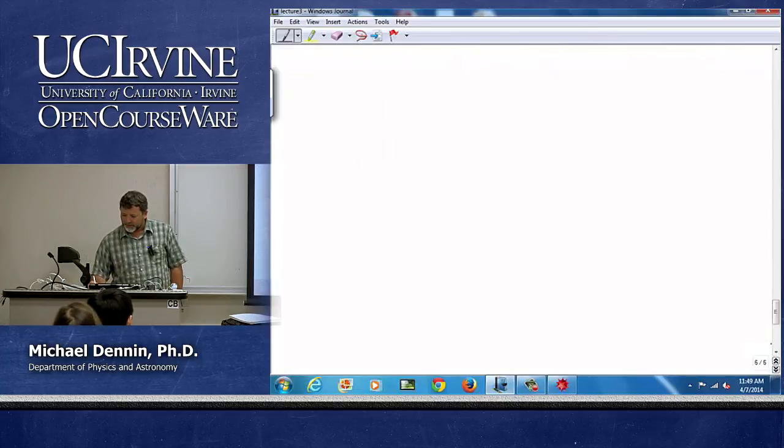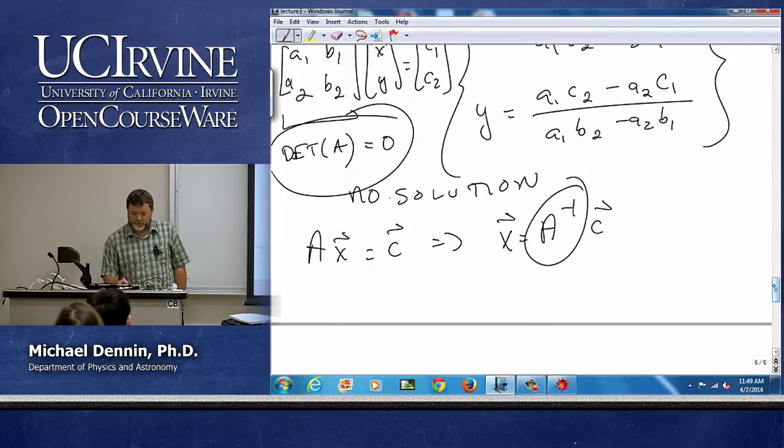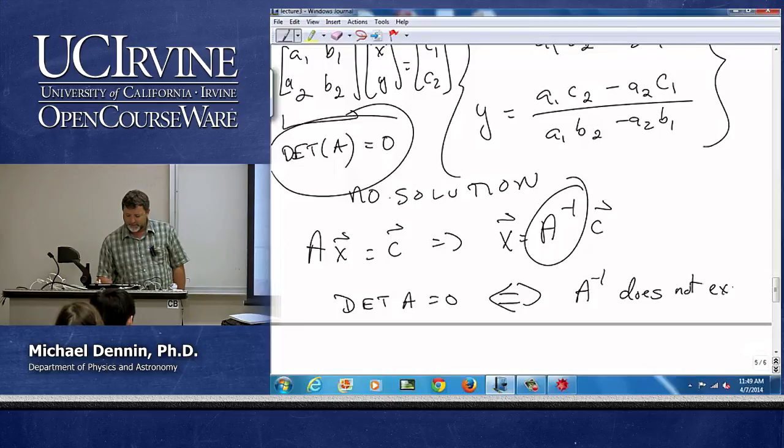And the final, so the final piece that is just an absolutely central idea that we're going to use so often, is the determinant of A equals zero if and only if A inverse does not exist.